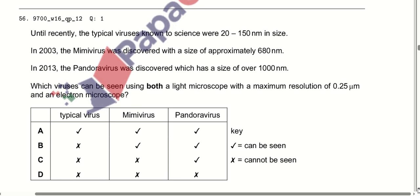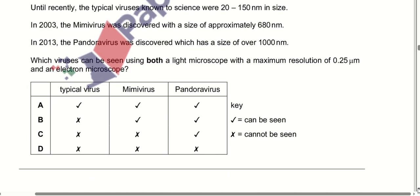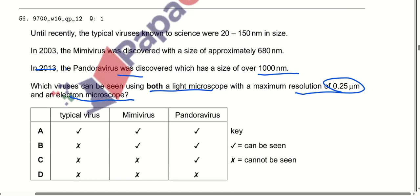Until recently, typical viruses were 20 to 150 nanometres in size. In 2003, the mimivirus was discovered at approximately 680 nanometres. In 2013, the pandoravirus was discovered at over 1000 nanometres. Which viruses can be seen using a light microscope with a maximum resolution of 0.25 micrometres and an electron microscope? Typical viruses cannot be seen because their size varies. The mimivirus and pandoravirus can be seen. Option B is correct.